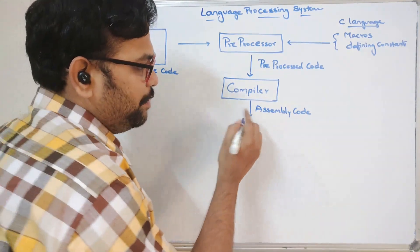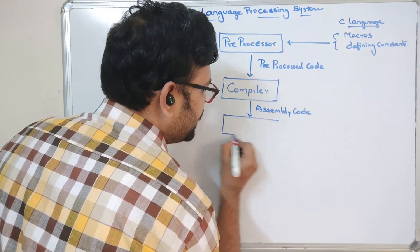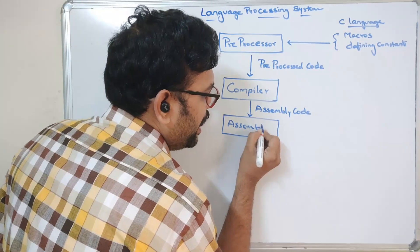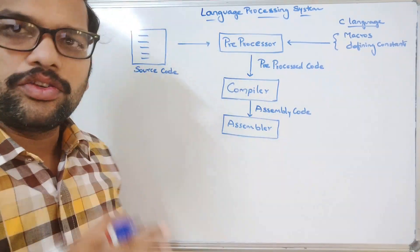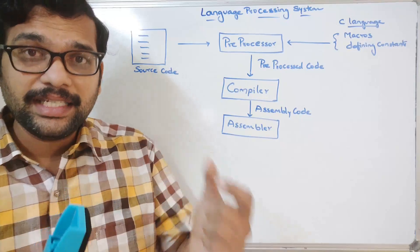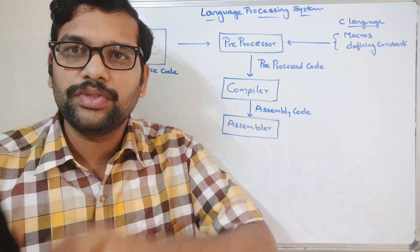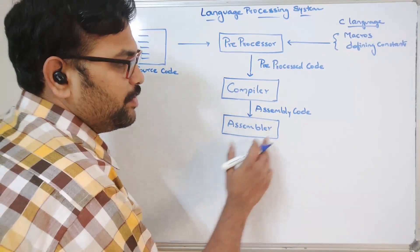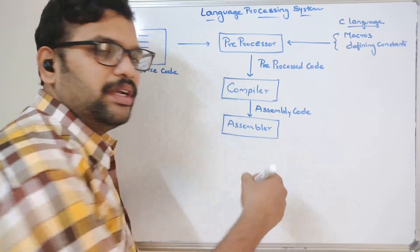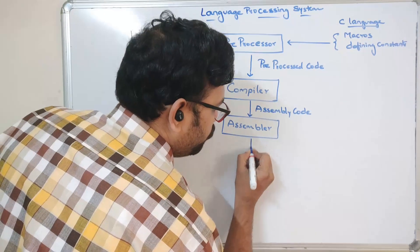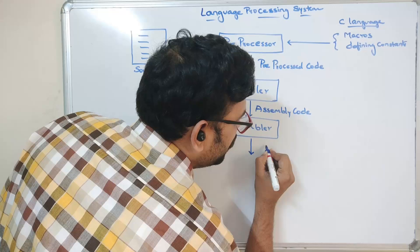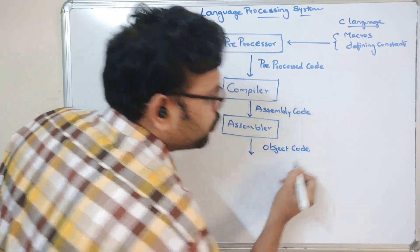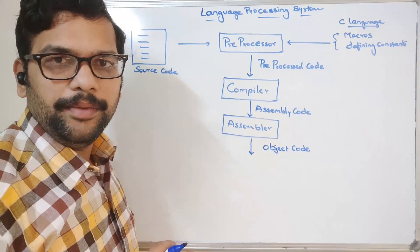This assembly code will be given to the assembler. The assembler is also a language translator — it will translate the assembly language to the low level machine language. The assembler will take the assembly code and convert it into machine level code, so the output from the assembler will be object code. Object code itself is machine code, which can be understood by the computer only.